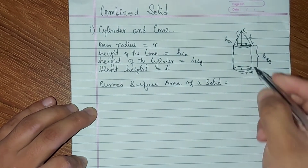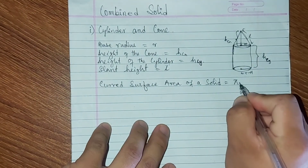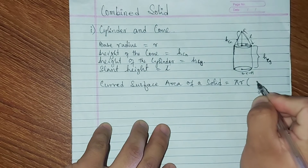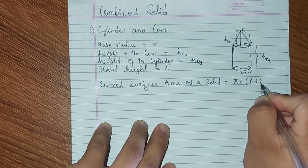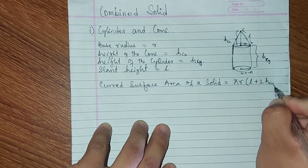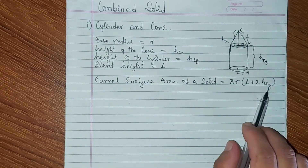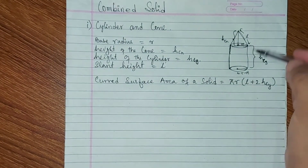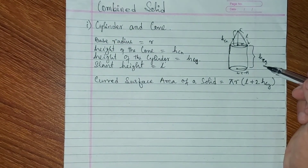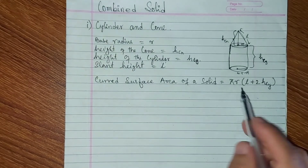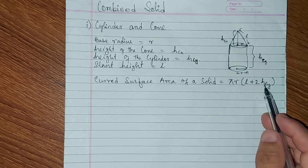So for this solid — the curved surface area. Since R is the same, the curved surface area of the solid formed by a cylinder and cone is: πr(l + 2h_cy), where l is the slant height of the cone and h_cy is the height of the cylinder.